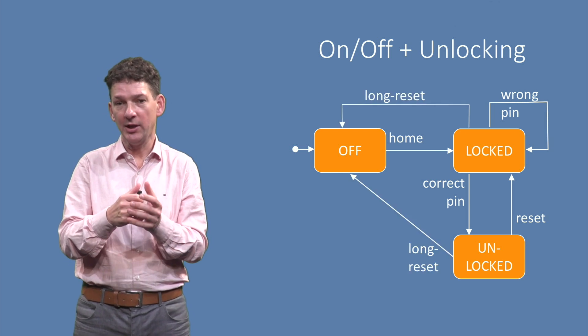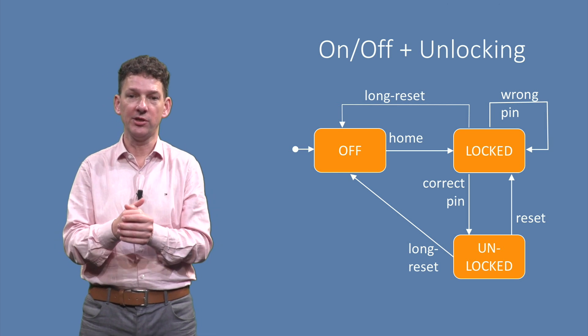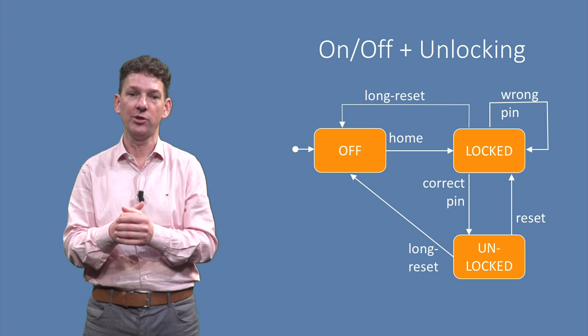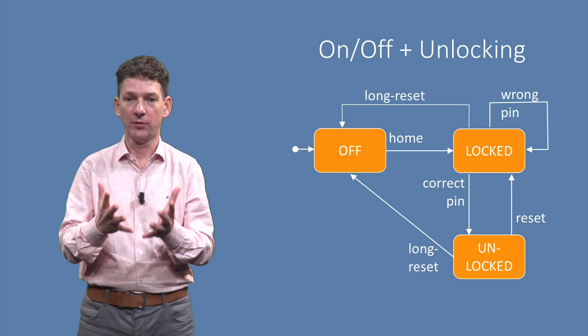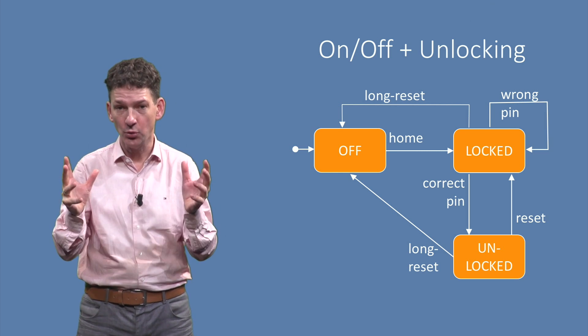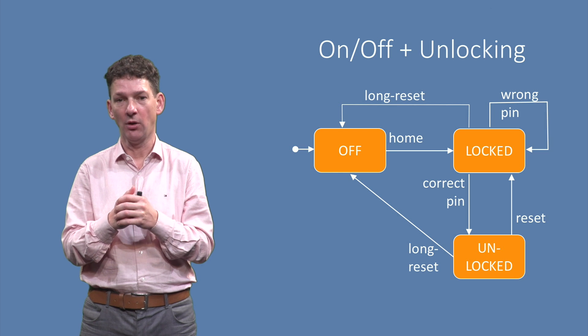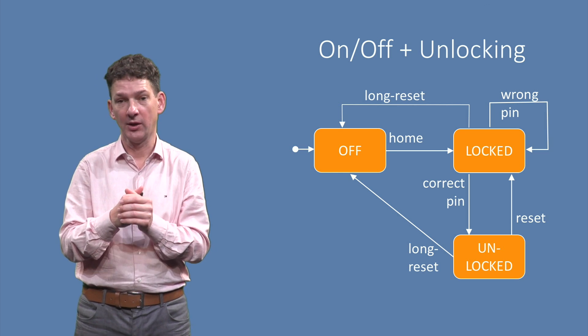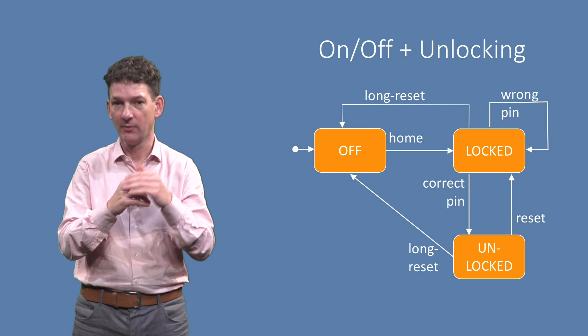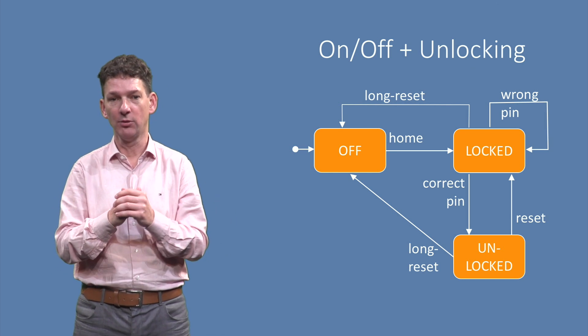Furthermore, we need to indicate how to switch off the phone, pressing the reset button in any state switches off the phone. Therefore, for now we add two transitions that go back to the off state, one starting in the locked state at the top, and one in the unlocked state at the bottom.